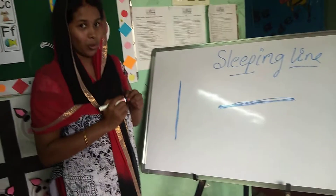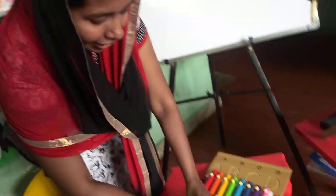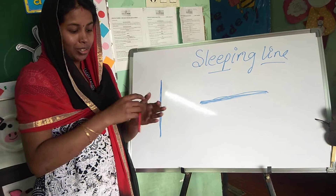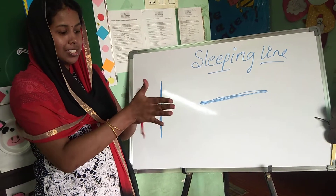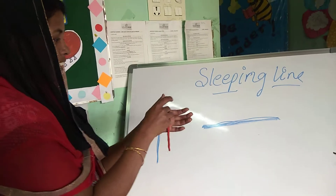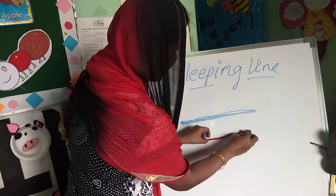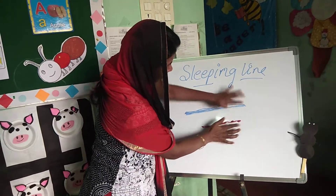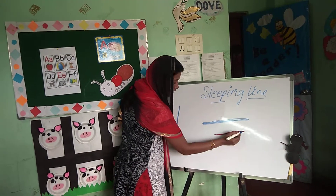Today also we will do the activity with the clay. Take a small part of the clay. Yesterday we did the standing line; today we will do the sleeping line. Roll the clay like this. We will put it like this. Sleeping line with clay!